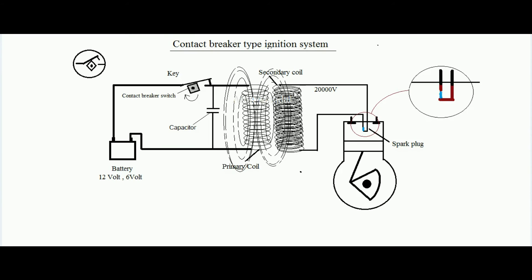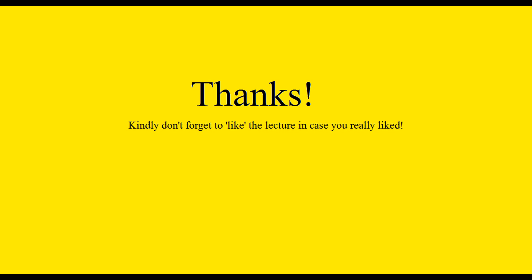The principle is that of a transformer, but the name of this system with primary and secondary coil in the ignition system is ignition coil, not transformer. Thank you.